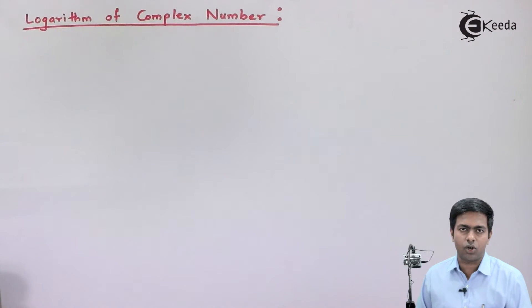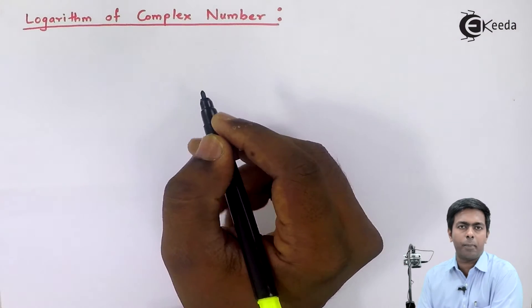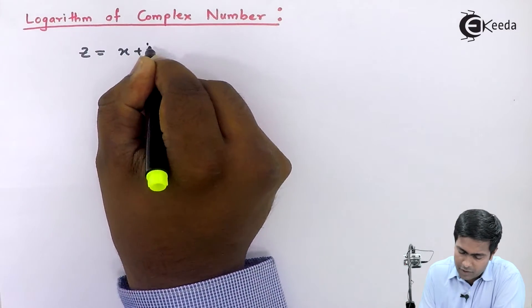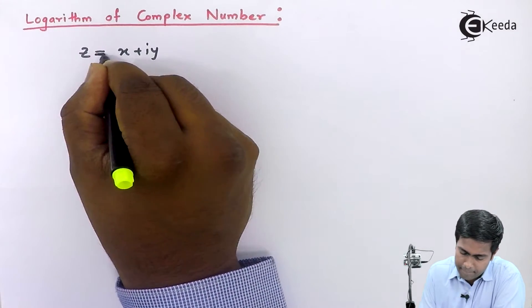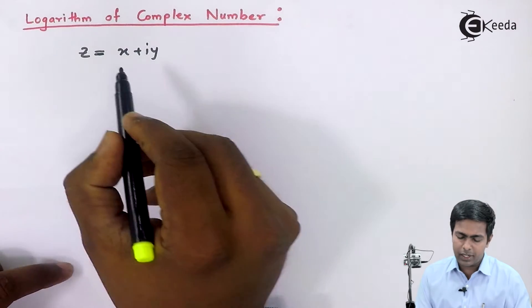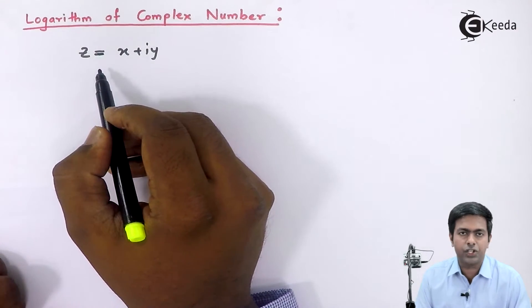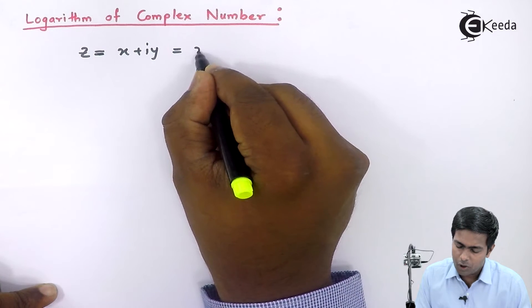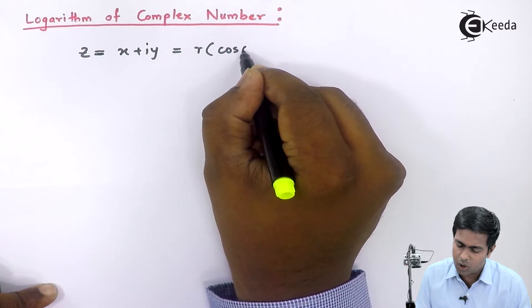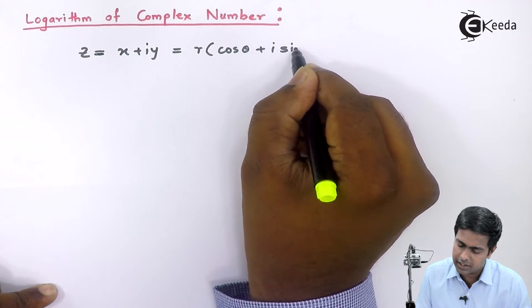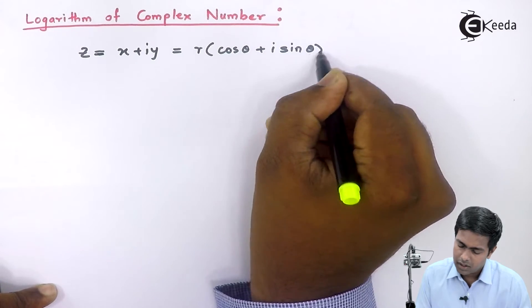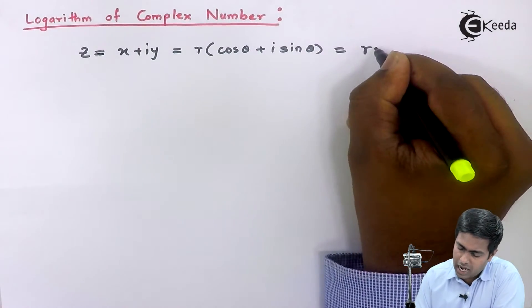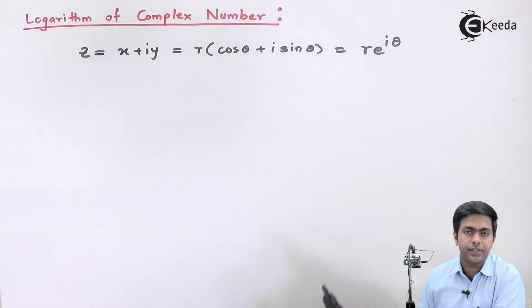To understand this concept, I am assuming one complex number z equal to x plus iy. Here I am representing the number in Cartesian form, and the polar form of this number is r into cos theta plus i sine theta. As we all know, the exponential form is r into e raised to i theta.